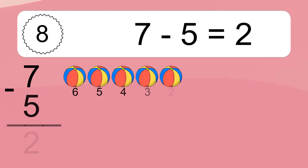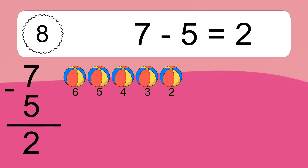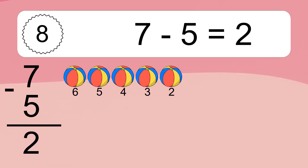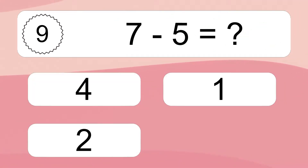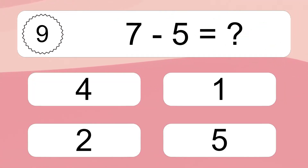6 minus 4 equals 2. Let's count it: 5, 4, 3, 2. 7 minus 5 equals what?